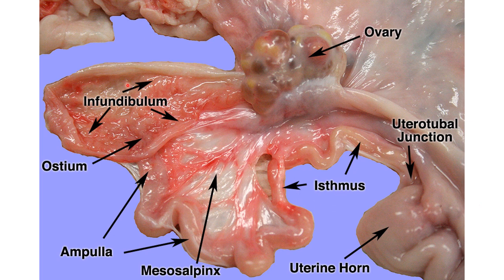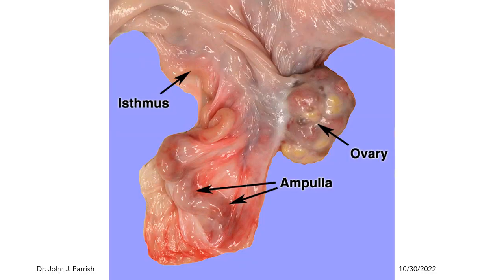This is the right oviduct of the sow reproductive tract. This is the left oviduct of our specimen, and you can again see the same structures. We have the isthmus part of the oviduct and the ampulla part of the oviduct. This oviduct was laid out so that you can see how the ampulla enters the infundibulum from the opposite side. This part is the infundibulum, and this part is the ampulla of the oviduct.